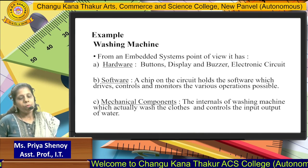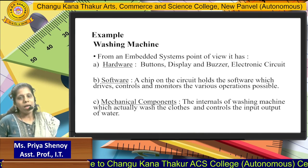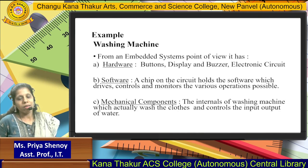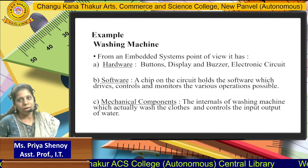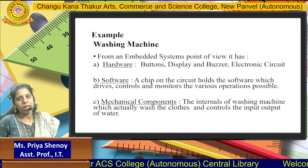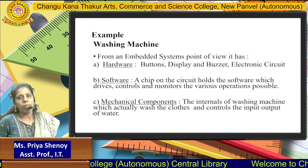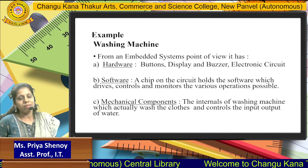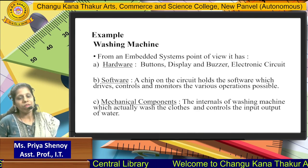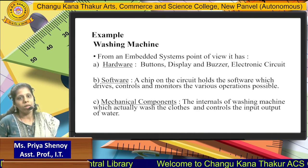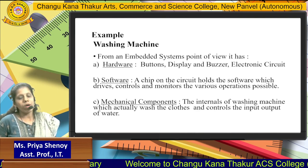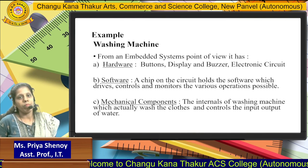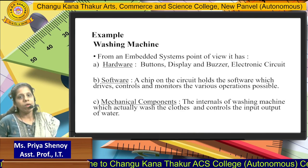Up till now we have discussed what an Embedded System is. It is consisting of hardware as well as the software. It may be having some mechanical components. It is designed to perform a specific function only, and the simplest example of such an Embedded System is the washing machine.